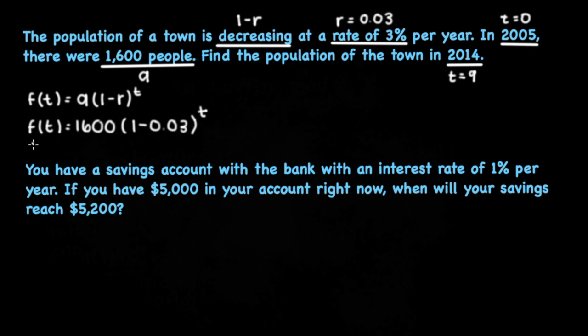We can also reduce down the decay factor. If we want to, that would give us 1,600 times 0.97 to the t. Now, to find the population of the town in 2014, we simply plug in 9 for t to get our answer.